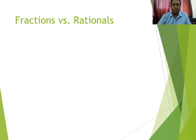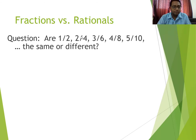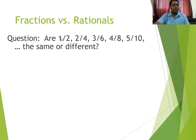Pehle baat yeh hoti hai ki equivalence relations ki hameh zarurat kyun padti hai. Us ke liye yahan par ek example put kar raha hoon — Fractions vs. Rationals. Observe these fractions: 1/2, 2/4, 3/6, 4/8, 5/10. Are these fractions same or different? Obviously you will say 1/2 and 2/4 they are same, they are equal. All these are also equal in value. But in terms of representation, 1/2, 2/4, 3/6 — they are all represented differently, because here we have used 1 and 2, here 2 and 4. But value-wise they are same. So equivalence relation yahi kaam karta hai humaray paas.